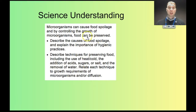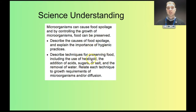The science understanding we're looking at is that microorganisms can cause food spoilage, and by controlling the growth of microorganisms, food can be preserved. We're going to look at the causes of food spoilage, talk about hygienic practices, and then look at ways of preserving food by using heat and cold, acids, sugars or salt, and removal of water, and explain why they prevent food from going off.